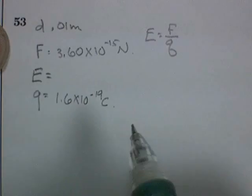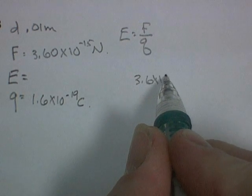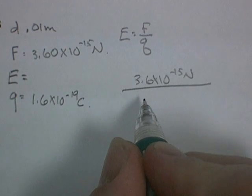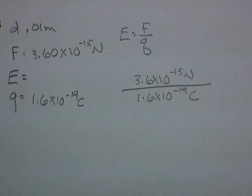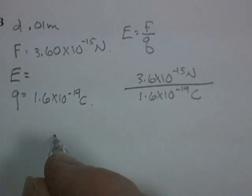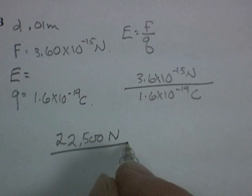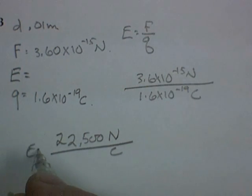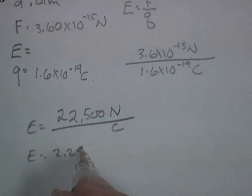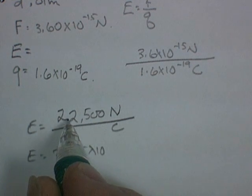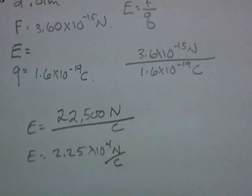So it looks pretty straightforward from here. We don't even need the distance. We say that E is equal to the force, 3.6 times 10 to the negative 15 newtons per 1.6 times 10 to the negative 19 coulombs. Make sure you type it into your calculator properly. And I'm coming up with 22,500, the units would be newtons per coulomb. Newtons per coulomb, electric field strength. I guess I could call that 2.25 times 10 to the 1, 2, 3, 4. 4 newtons per coulomb. And that works.